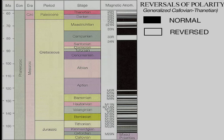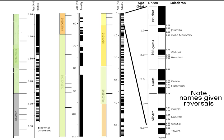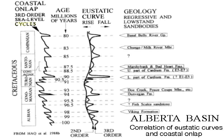Their existence in strata worldwide, and the fact that many are isotope-dated, makes them an invaluable aid — in addition to dating lithologic successions, they can be related to Milankovitch cycles, eustatic cycles, and the several elements of sequence stratigraphy. This slide of Mesozoic onlaps in the Alberta basin of Canada demonstrates the use of third-order eustatic cycles for correlation.